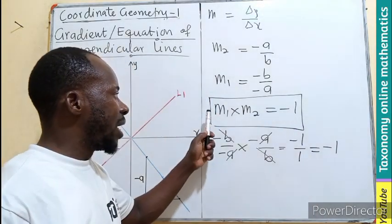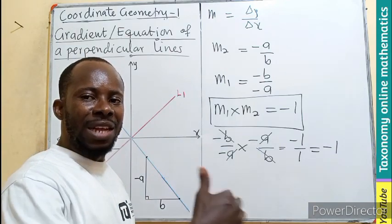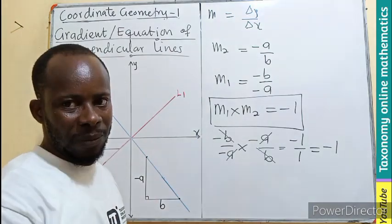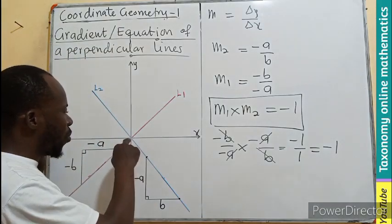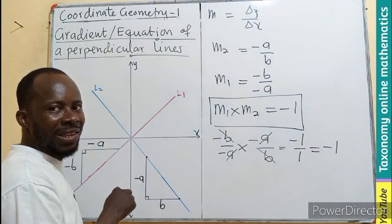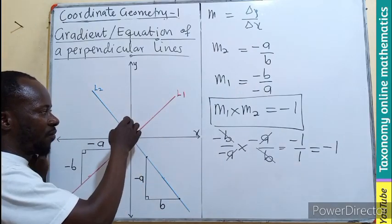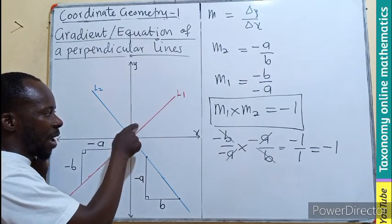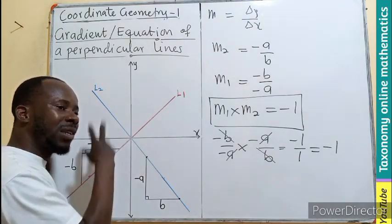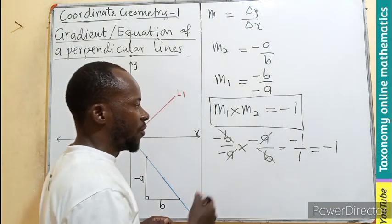So, we can say that truly, the product of their gradient of 2 perpendicular lines. We know when 2 lines are perpendicular. Their meeting point, their intersection give us 90 degrees. You know, this quadrant is 90. So, since we are flipping 45, 45. 45 plus 45 give us 90. So, 90, 90, 90 all along.